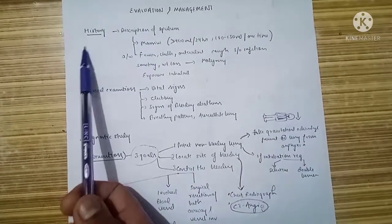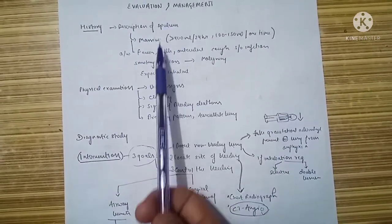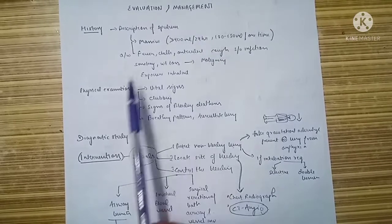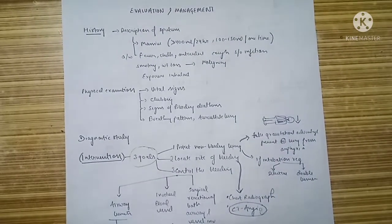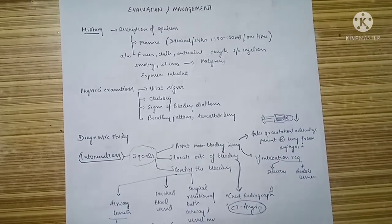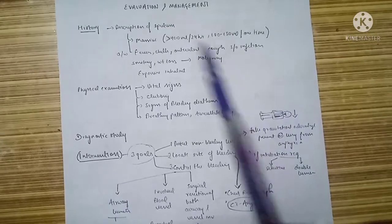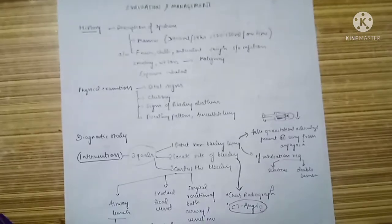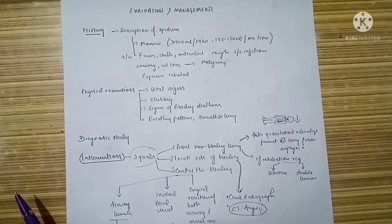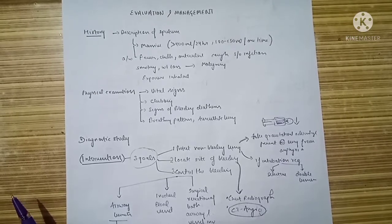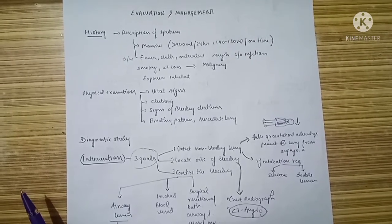Talking about the history, we need to describe the sputum — its color, which may be pink and frothy in cases of pulmonary edema, or may have clots. A massive hemoptysis is defined as more than 400 ml in 24 hours or a single episode of more than 100 to 150 ml.